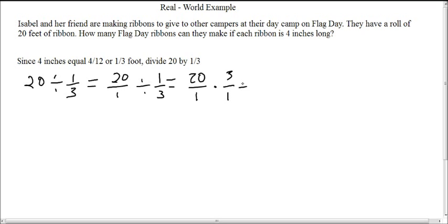And of course, numerator times numerator is 60, 3 times 20 and 1. And then we can reduce that improper fraction to 60.